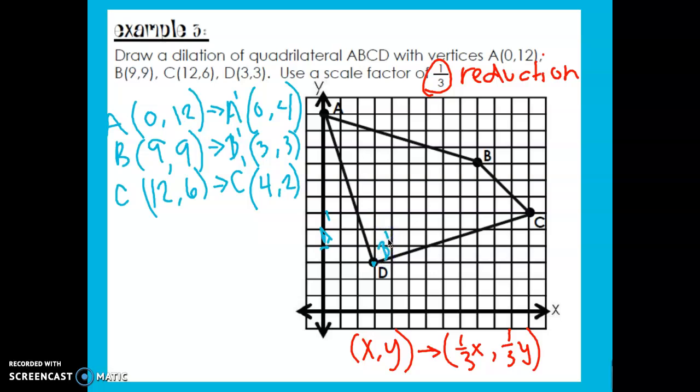C prime is at (4, 2). That's how I knew I messed up because it shouldn't have been in line with C. And then our last point, D, started at (3, 3). If I multiply by 1 third to get D prime, same thing as dividing by 3, so my new coordinate is at (1, 1). So there is D prime.